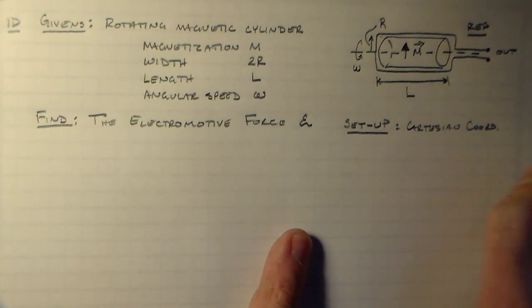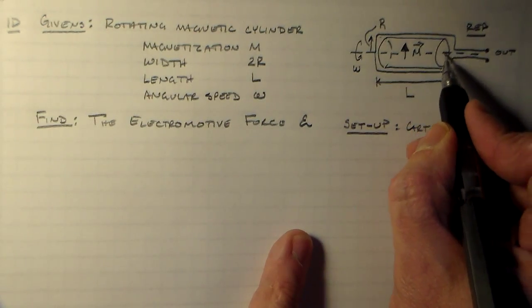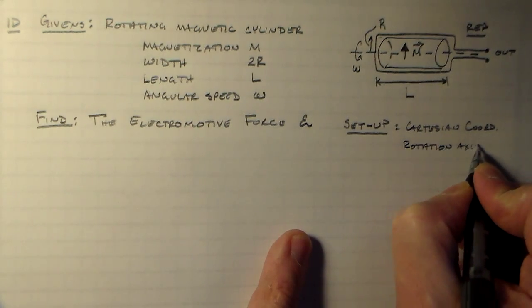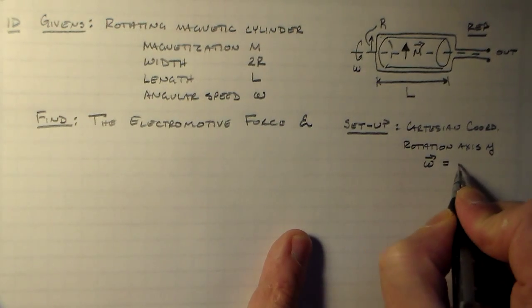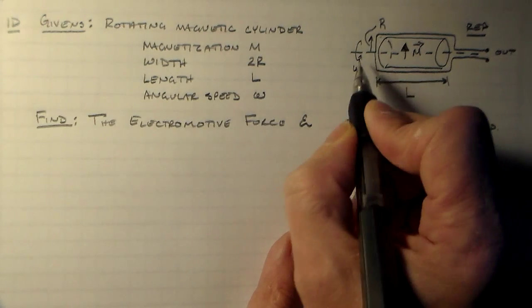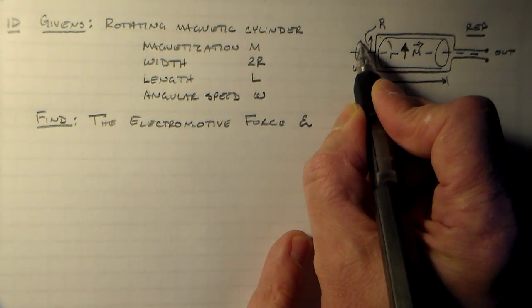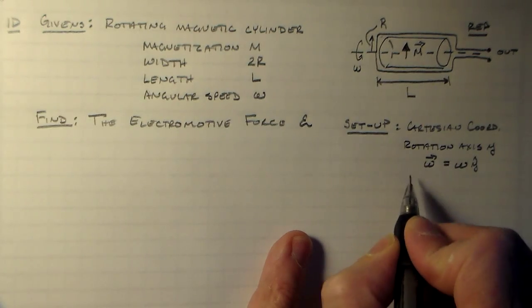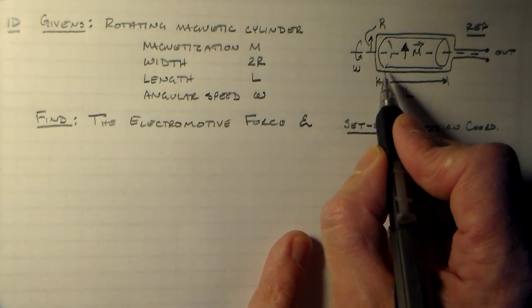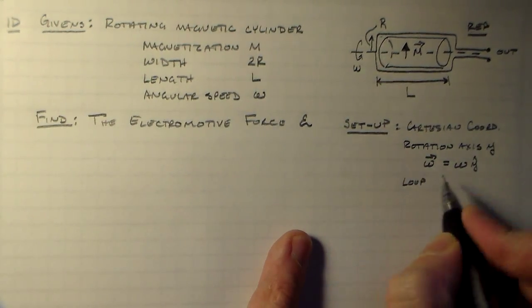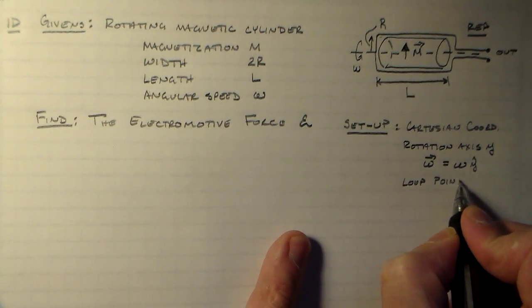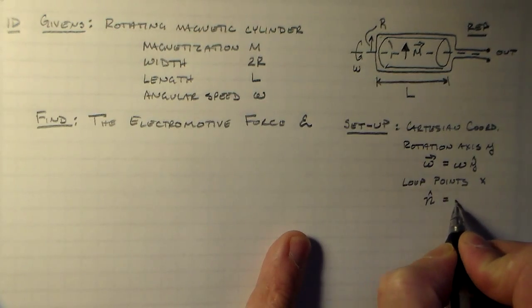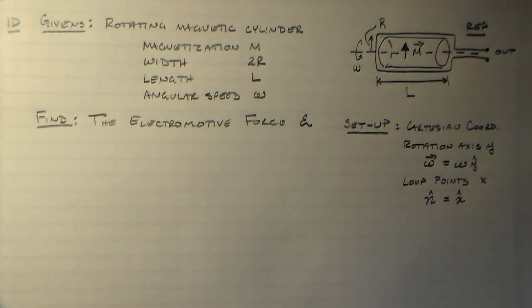I guess we'll have the rotation axis, the y axis. That means that the angular velocity is the angular speed times the y axis. The angular velocity is in the direction that the thing is turning. And then we'll have to say that the current loop or the loop is pointed in the y direction, so that its normal is equal to the x hat direction.